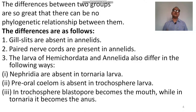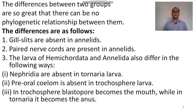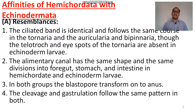The differences between two groups are so great that there can be no phylogenetic relationship between them. Gill slits are absent in Annelida. Paired nerve cord is present in Annelida. The nephridia are absent in tornaria. Pre-oral coelome is absent in trochophore larvae. In trochophore, the blastopore becomes the mouth, while in tornaria it becomes the anus.